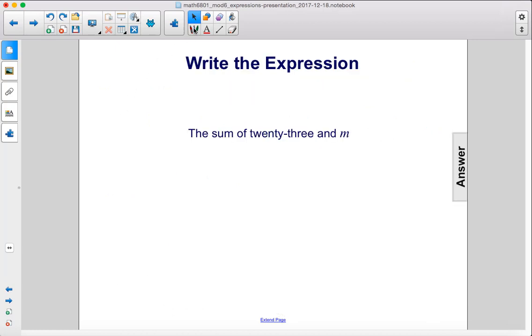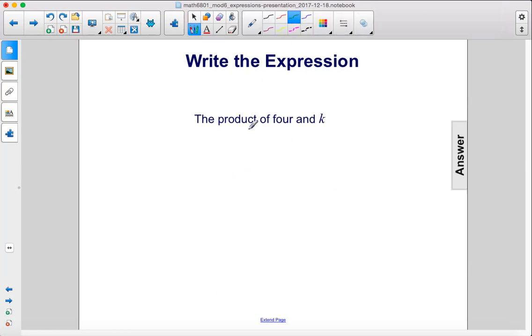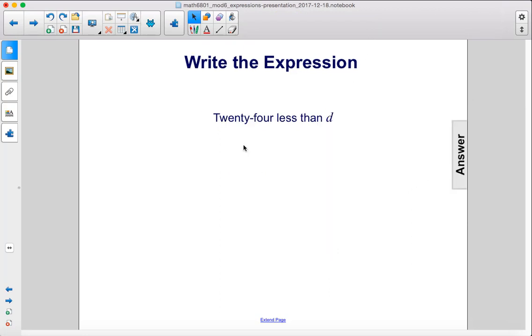Write the expression. The sum of 23 and m is 23 plus m. The product of 4 and k. Remember, product is multiplication. So 4 times k, 4k. 24 less than d. Remember, when we see than, we switch the order. So d minus 24.